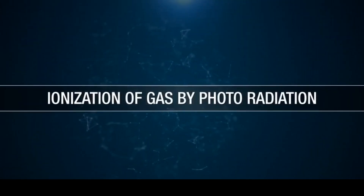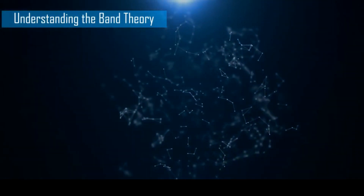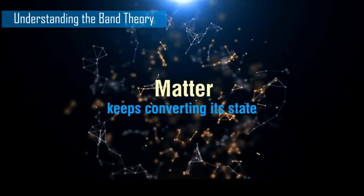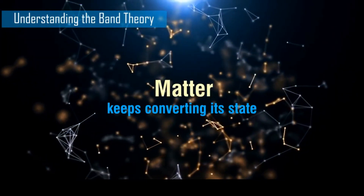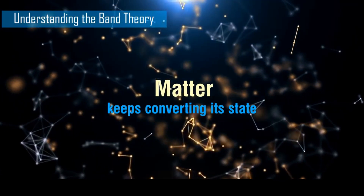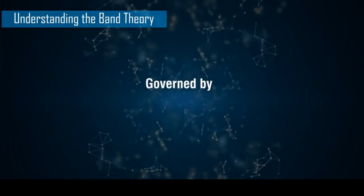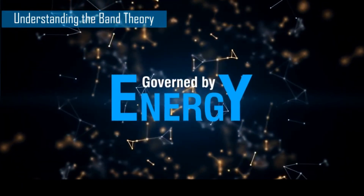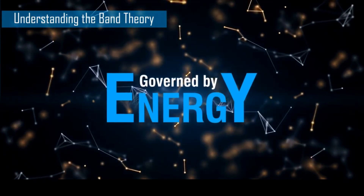Introduction to Energy Band Theory. In chemical physics, we know that matter keeps converting its state and gives rise to various different properties that we see around us. This story of matter is completely governed by the energies that keep stabilizing and destabilizing the matter, and depends quite a lot on the surroundings.